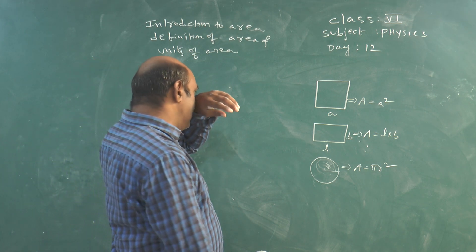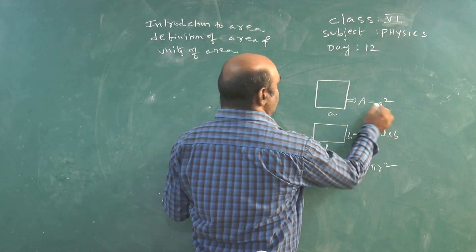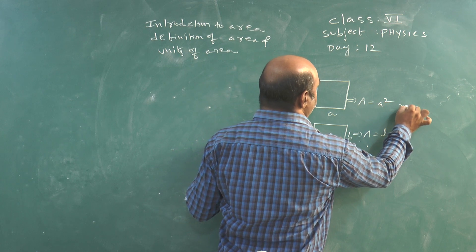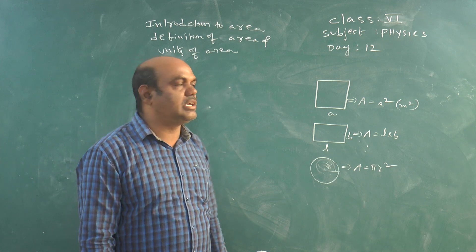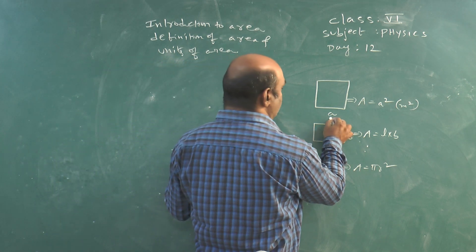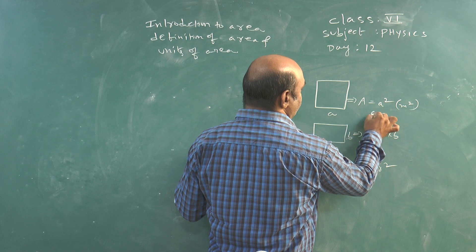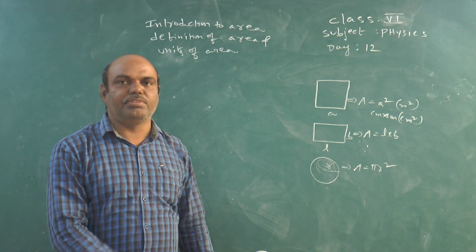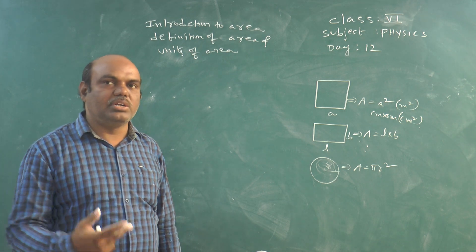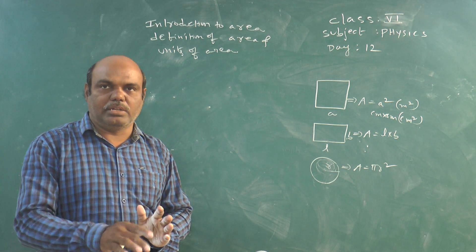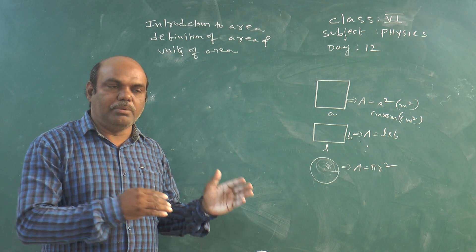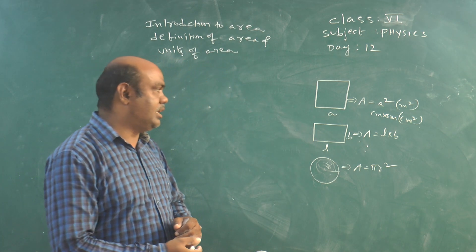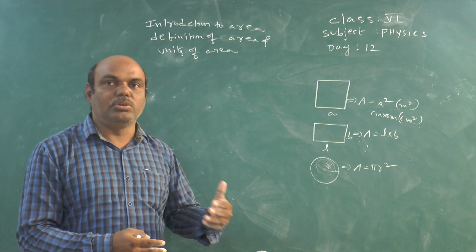What are the units of area? If the side length is in meters, then meter into meter gives meter square. So meter square is the SI unit of area. If you consider length in centimeters, then centimeter into centimeter gives centimeter square. So centimeter square is the CGS unit of area. Depending upon the given units of side length, we can state the units of area.